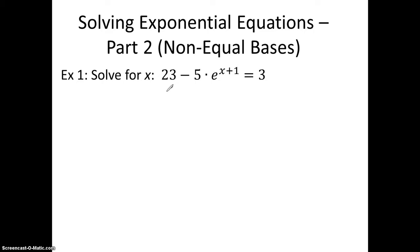So here's the first one. We're going to solve for x: 23 minus 5 times e to the x plus 1 equals 3. So the first thing we want to do is whenever we're solving something like this, we want to isolate the exponent part. So we're going to try to get this part right here by itself.